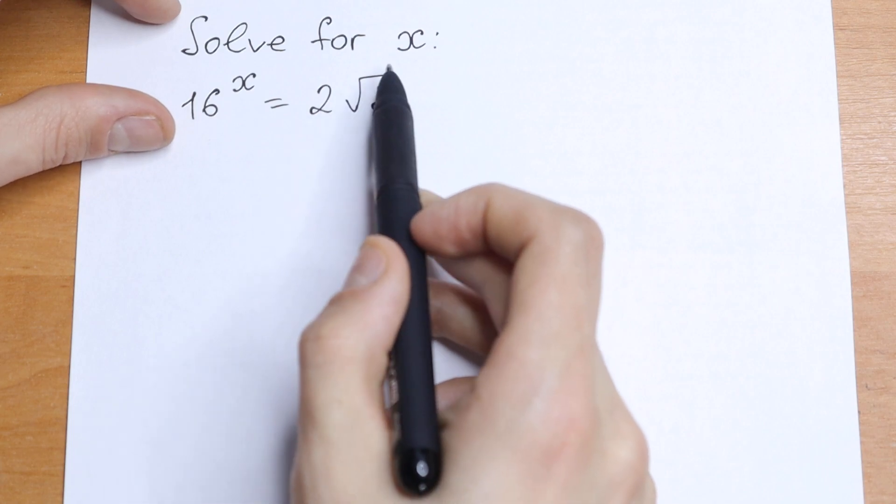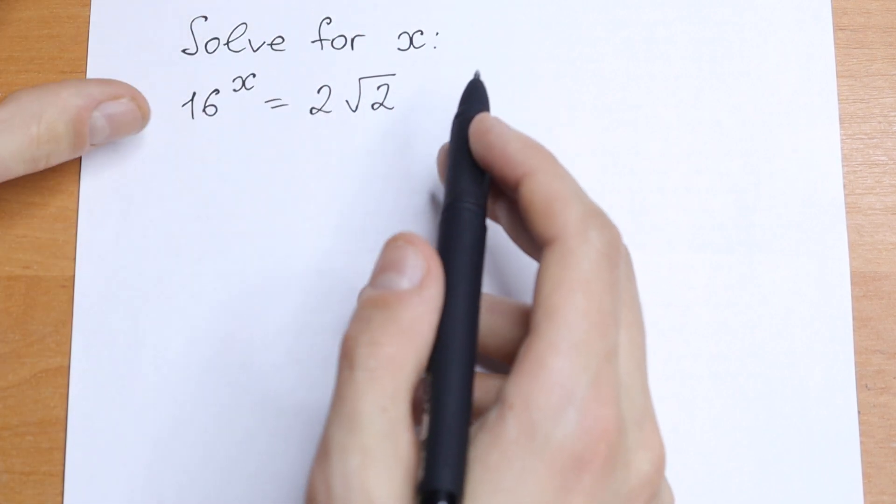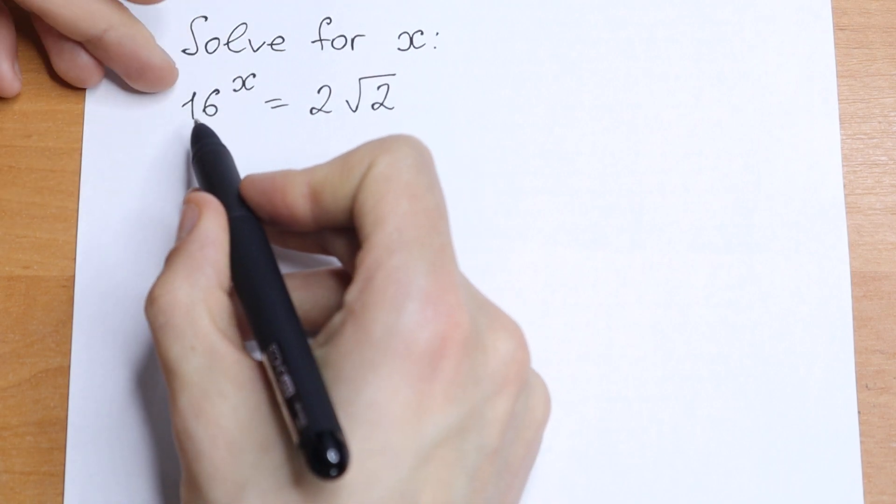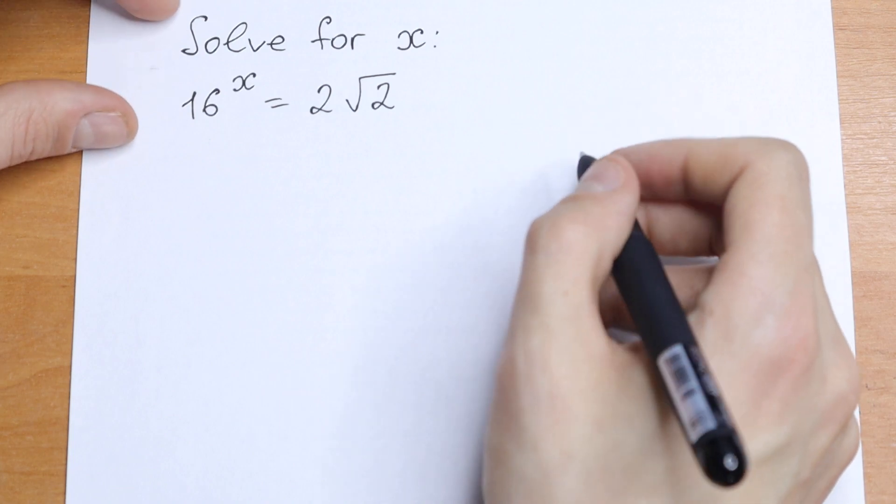This is 2, this is square root of 2, of course we can write as 2 to the sum power, and this 16 we can write as 2 to the fourth power. So we can work with these 2's, only of these 2's.